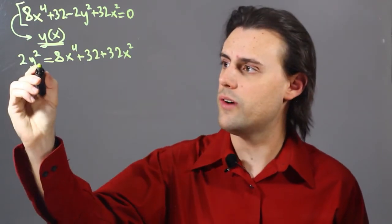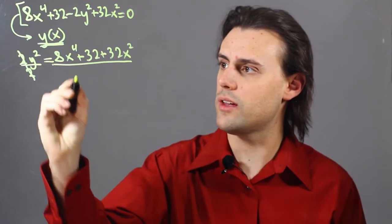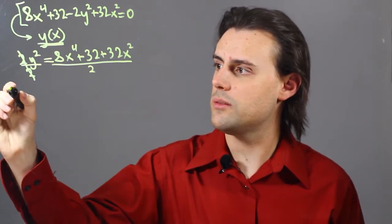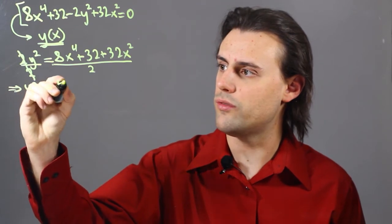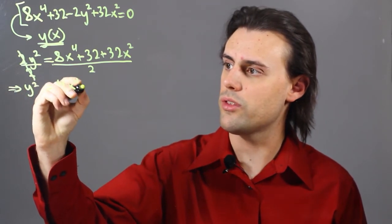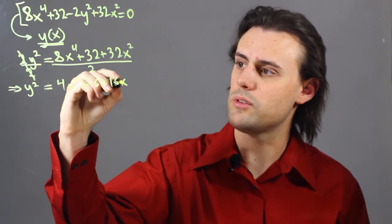The next step is to divide both sides by 2. So I get rid of that factor on the left-hand side, and this simplifies to y squared is equal to 4x to the fourth plus 16 plus 16 times x squared.